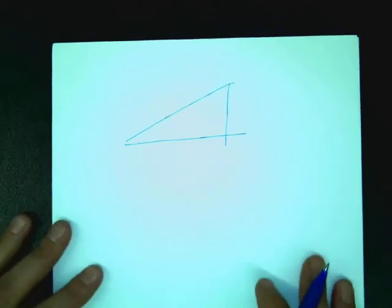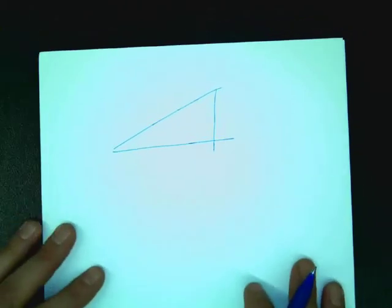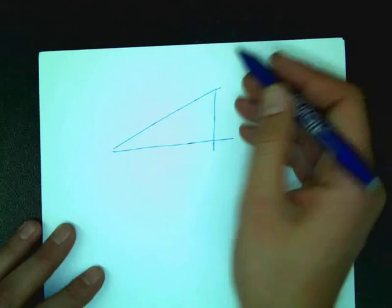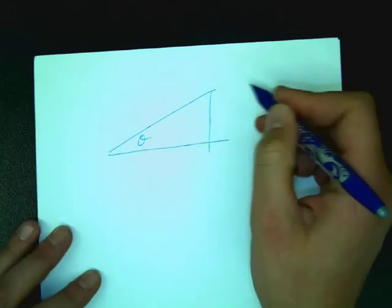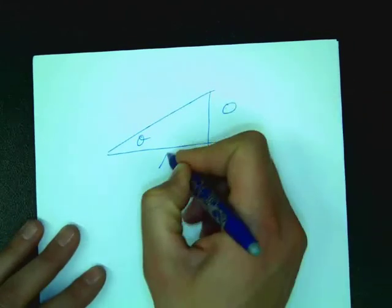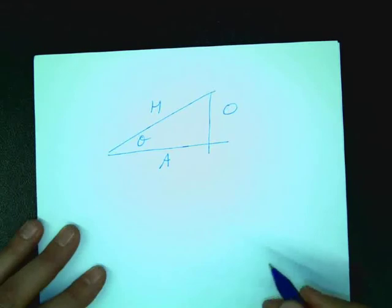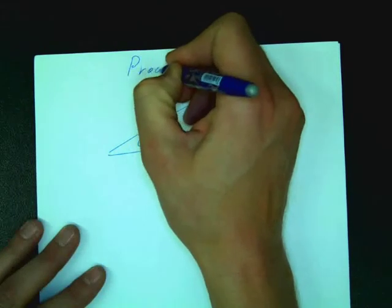So a proof of the equation for tangent. So I've got my angle theta. I've got opposite, adjacent, hypotenuse.